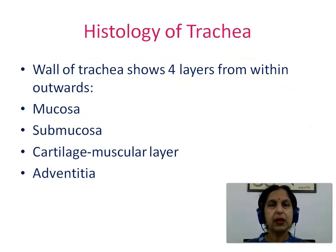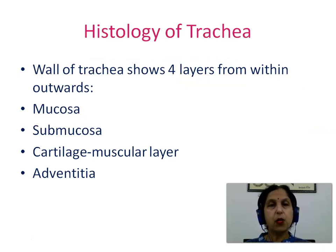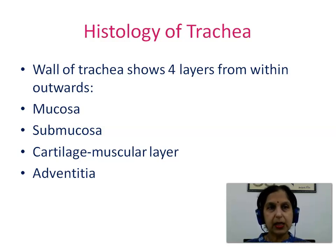We now go on to see the histology of trachea. The wall of trachea shows four layers from within outwards: mucosa, submucosa, cartilage muscular layer, and adventitia.